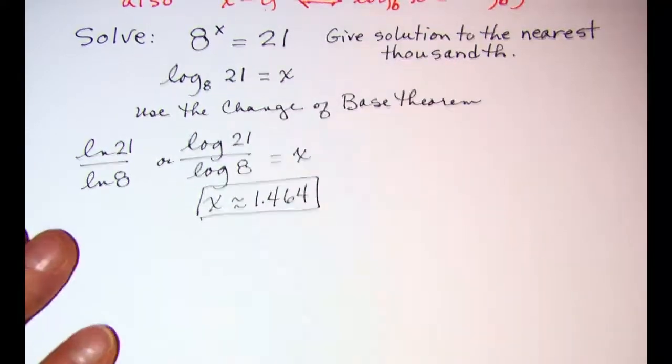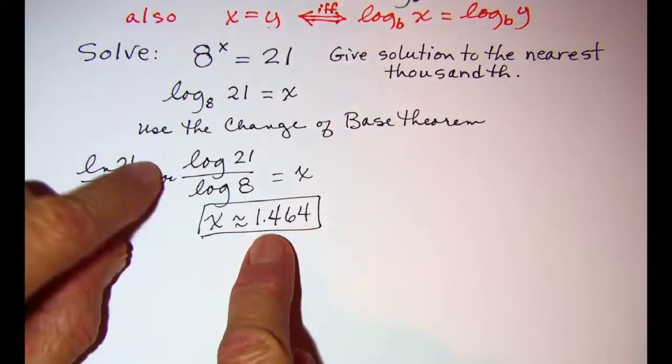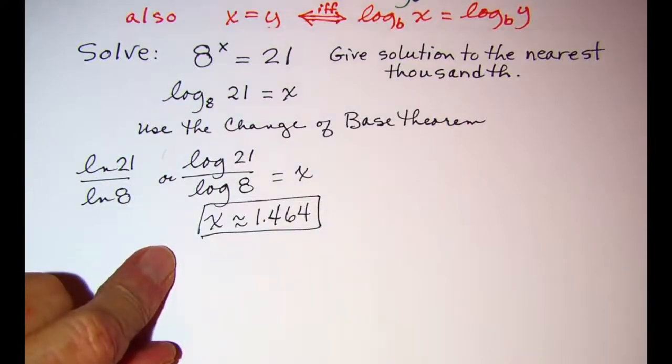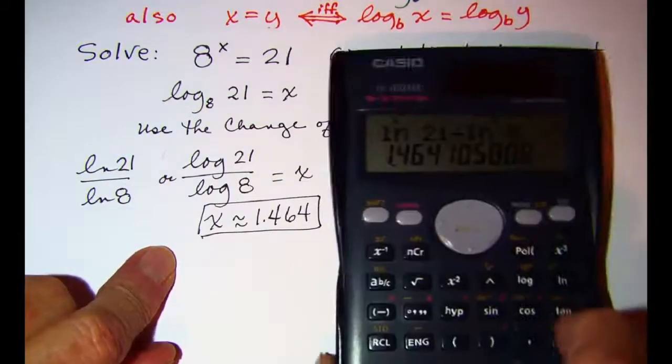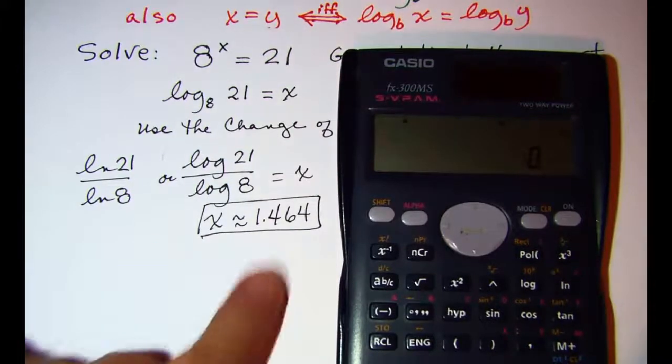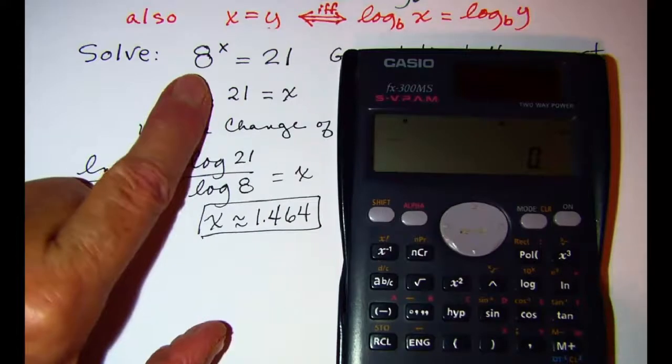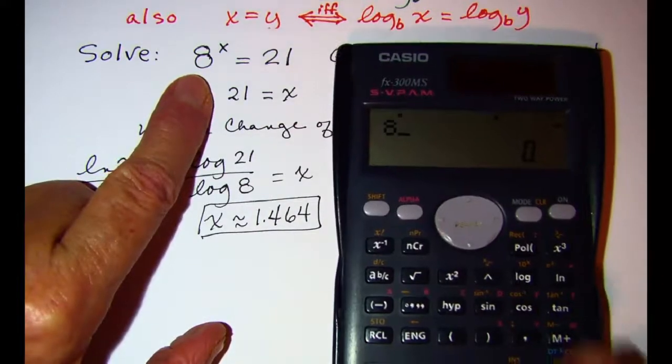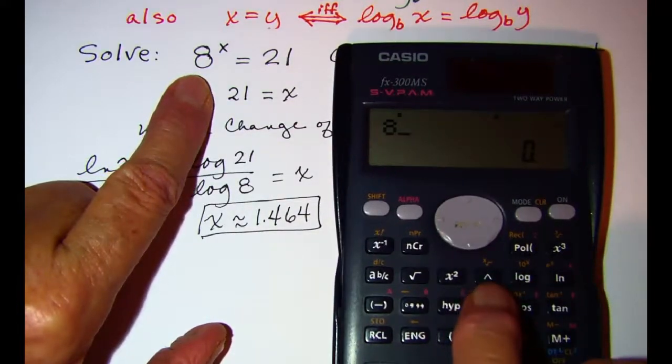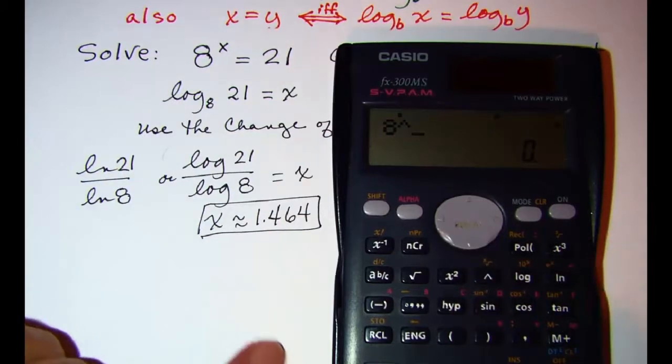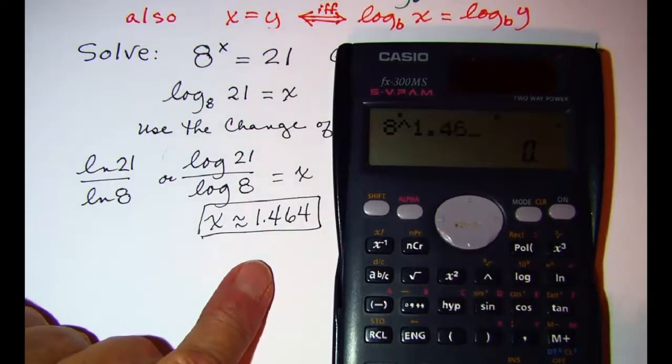Now we could check ourselves. We're getting x to be about 1.464, so our answer won't be exact but should be close to 21. If we take 8 and raise that, this is your power key, to the 1.464.